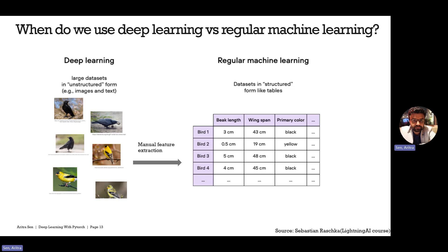For example, as shown on screen, if we have images of birds and want to identify the type of bird, traditional machine learning requires manual feature extraction — like beak length, wingspan, and primary color — to make predictions. But with deep learning, we can use the images directly with minimal data preparation and build a working model. This makes deep learning ideal for unstructured data like images or text.